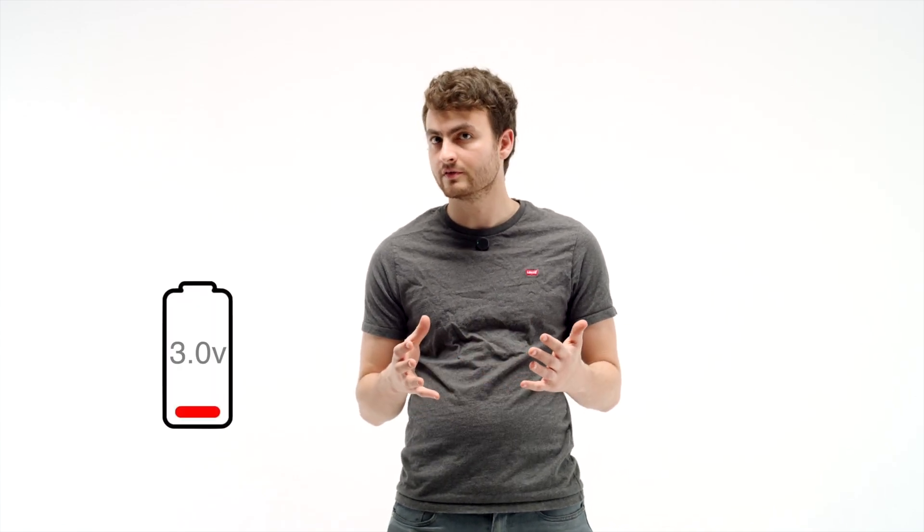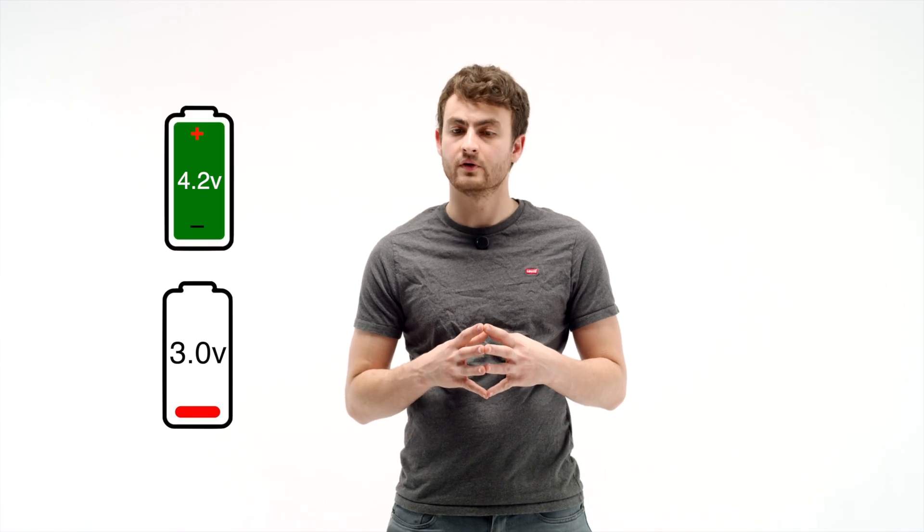Almost all e-bikes use lithium batteries. They're very high energy density. They can produce a lot of power but they're dangerous if they're treated wrong. There's lots of different shapes and sizes of lithium batteries but most of them are emptied around 3 volts and fully charged at 4.2 volts.